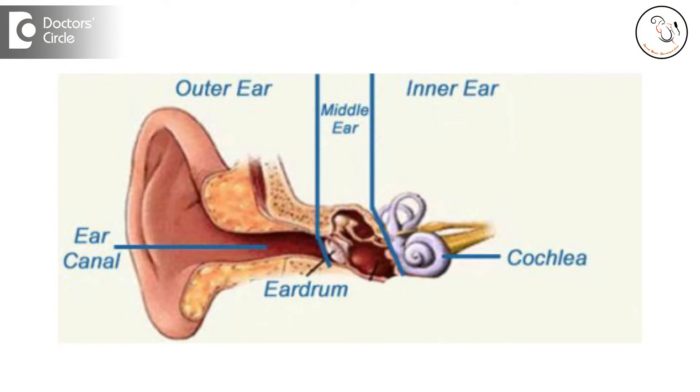The ear is divided into the outer ear, the middle ear, and the inner ear. The middle ear is connected to the nose on one side by means of a tube called the Eustachian Tube. It is in continuum with the bone behind the ear called the mastoid bone. This middle ear is called the tympanum.